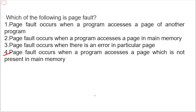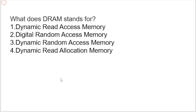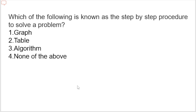What does DRAM stand for? Options are: dynamic read access memory, digital random access memory, dynamic random access memory, or dynamic read allocation memory. The correct option is dynamic random access memory. DRAM is a type of RAM used for dynamic storage of data. Each cell carries only one bit of information.